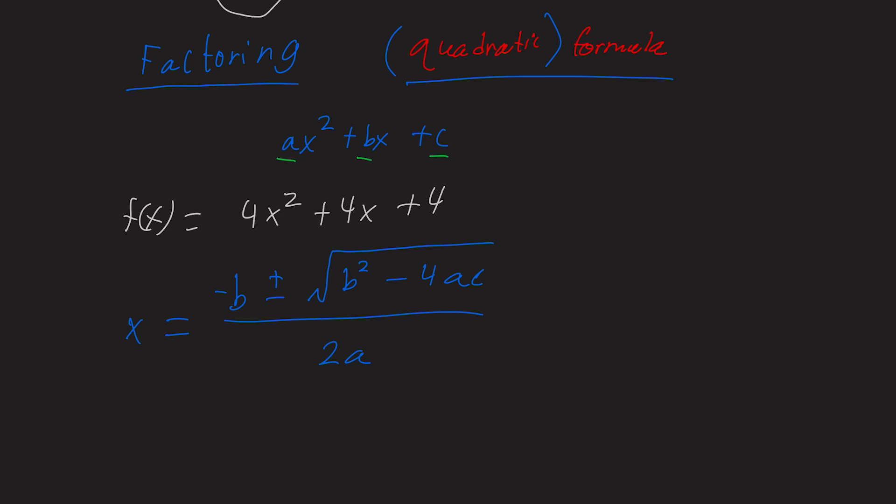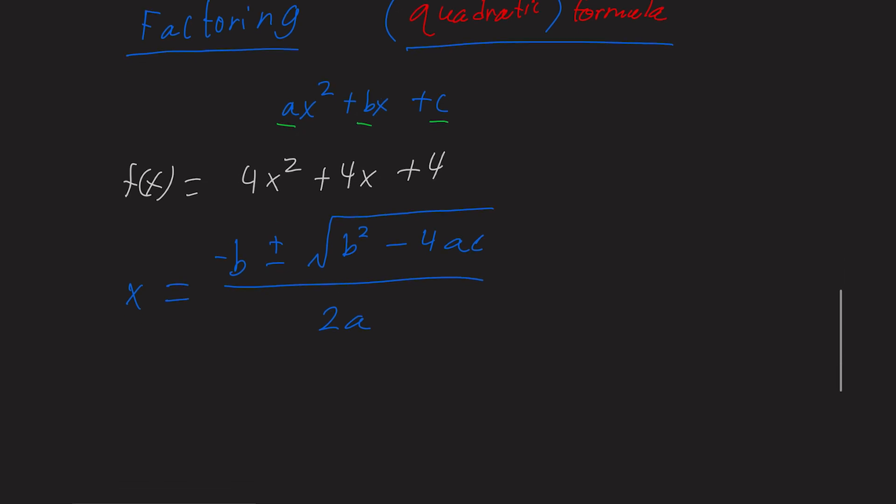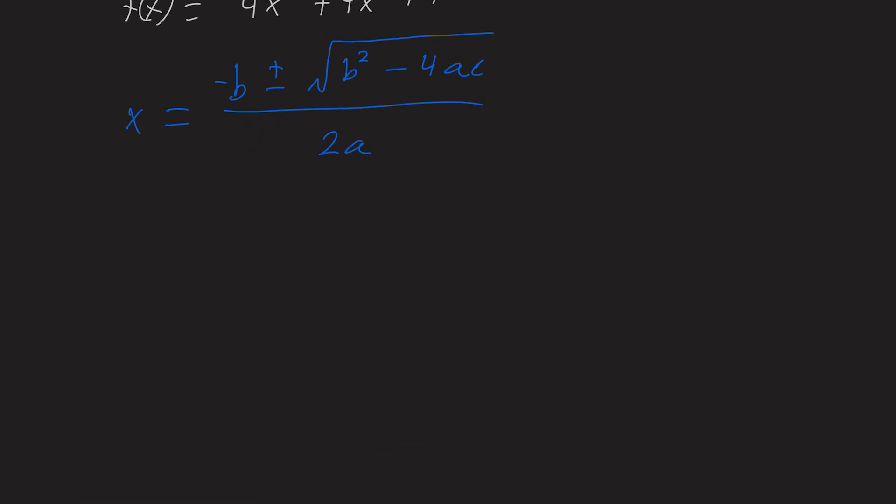Now, a lot of you probably haven't seen the plus or minus symbol before. All that means is that you are evaluating two equations. In one sense, you're evaluating the equation x equals negative b plus rad b squared minus 4ac. And the other equation equals negative b minus rad b squared minus 4ac all over 2a.